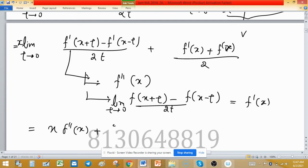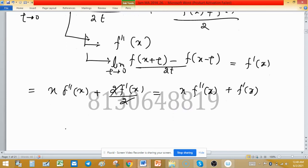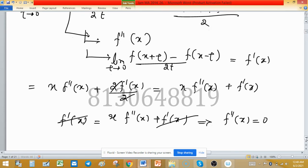So we obtained x f''(x) plus f'(x). Finally, in left hand side was f'(x) equals x f''(x) plus f'(x). So this one cancel out by this one. So we obtained, this implies that f''(x) equals zero.